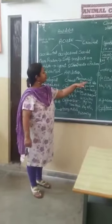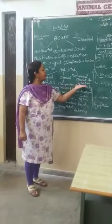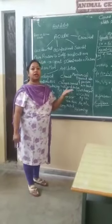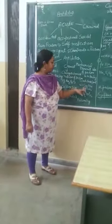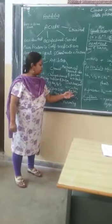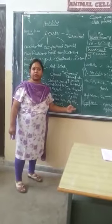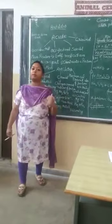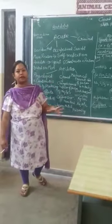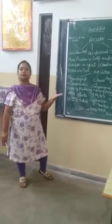Third type of antidote is mechanical antidote — it will prevent the absorption of poison into your body. Examples include activated charcoal, copper sulfate, magnesium sulfate, and disodium hydrogen phosphate. They will prevent the absorption of poison in our body. So these were the three types of antidote based on the mechanism of action.